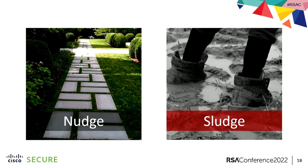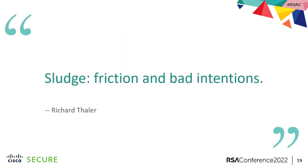The opposite of nudge is sludge. Sludge is when people face high levels of friction that effectively obstructs their efforts to get their work done. Nudge gets them to the end; sludge obstructs them. Thaler says sludge is friction and bad intentions — I'm going to argue with both of those points. I would like to think we can agree that when we get in our users' way and make their lives terrible, it's not necessarily a bad intention. It may be thoughtless, but we're usually good-intentioned — we're doing this for your own good. That's why we need nudges. Now, friction is really interesting — I'll come back to friction in a moment.